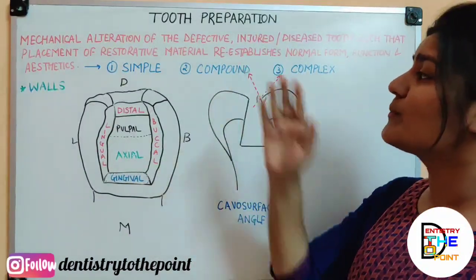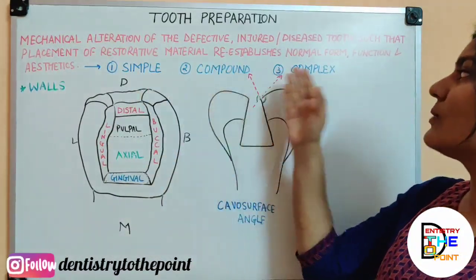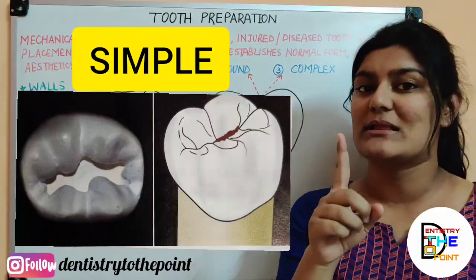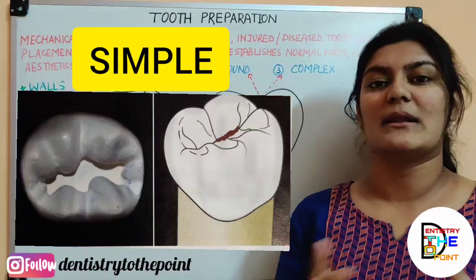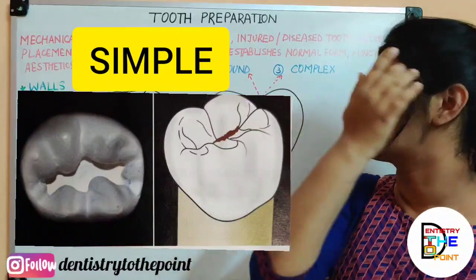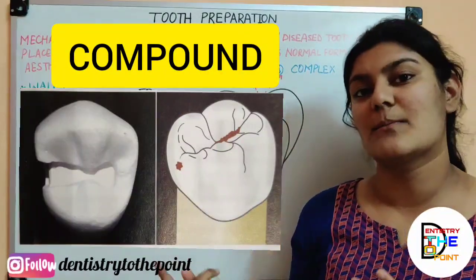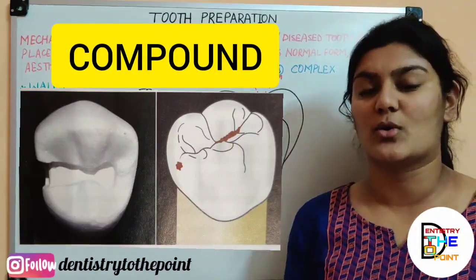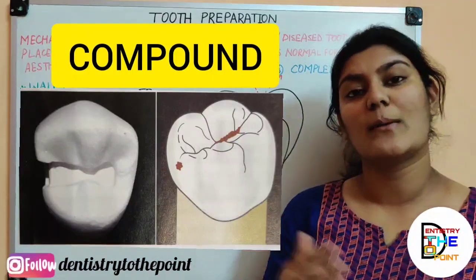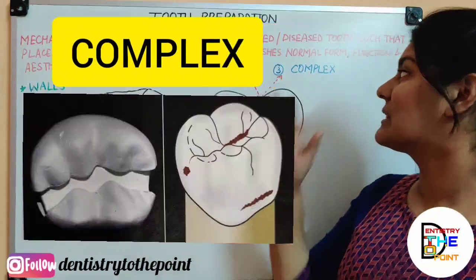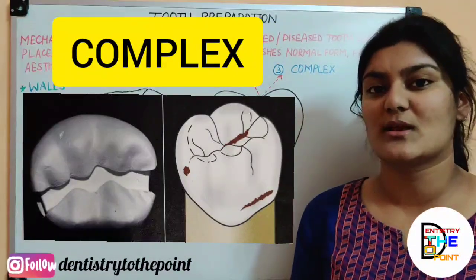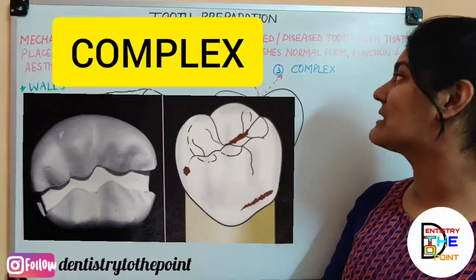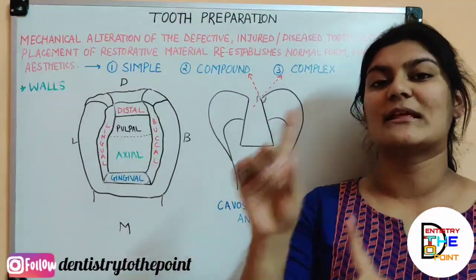Tooth preparations are of three types: simple, compound and complex. A simple tooth preparation involves only one surface — for example, only the occlusal surface. A compound tooth preparation involves two surfaces — for example, occlusal plus mesial, which you call mesio-occlusal, or occlusal plus distal, which you call disto-occlusal. A complex tooth preparation involves more than two surfaces — for example, occlusal, mesial and distal: three surfaces involved.